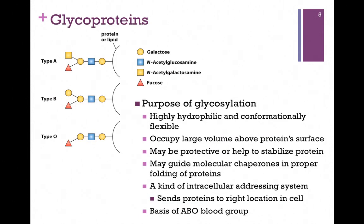The purpose of glycosylation is that, for one thing, it gives us a tremendous variety. These residues are very hydrophilic because of all of those OH groups and conformationally very flexible. Remember, these are generally on the outside of the cell — they occupy a large volume above the protein surface and are highly hydrated. They may be protective, or they may help to stabilize a protein. In some cases, carbohydrate residues are added to direct the protein to a molecular chaperone for proper folding, and once it's folded, that carbohydrate group is removed. It can also serve as a kind of intracellular addressing system to send the protein to the right location in the cell.